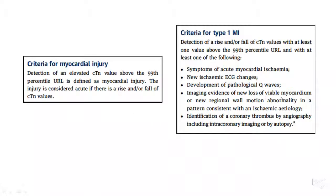Let us start with the definition of type 1 MI. He reminded us that type 1 MIs are the STEMIs and the non-STEMIs that we see. Type 2 MI is an imbalance between the demand and the supply of oxygen in the heart — what is called demand ischemia, also known as type 2 myocardial infarction.